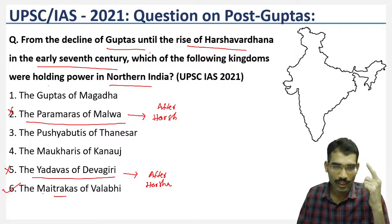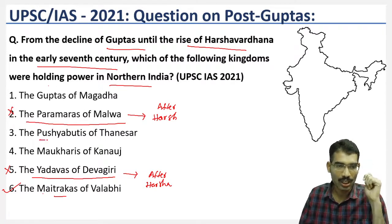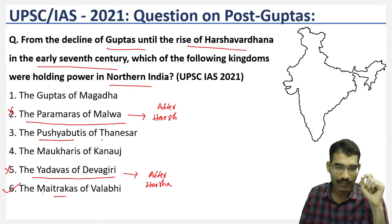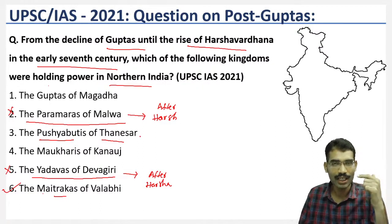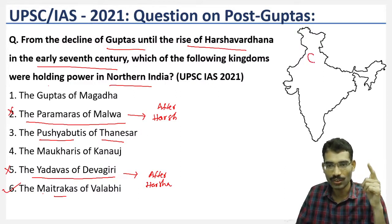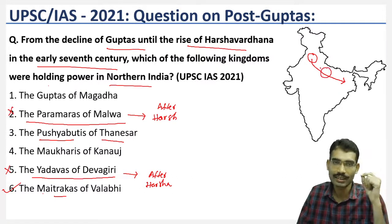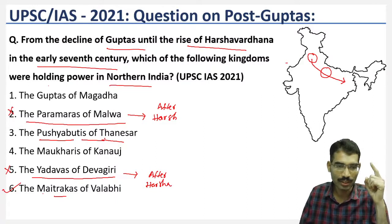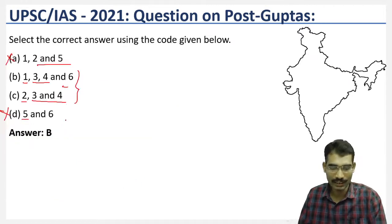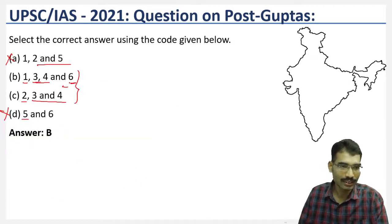While studying Harshavardhana, we know he belonged to the Pushyabhuti dynasty based at Thanesar. The Pushyabhutis were ruling at Thanesar first, and when Harshavardhana became king he expanded his territories and made Kanauj his capital. This means the Pushyabhutis of Thanesar were already present before the full emergence of Harshavardhana, confirming that options 3 and 6 are correct.